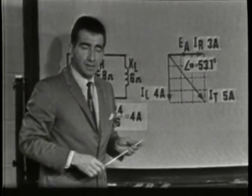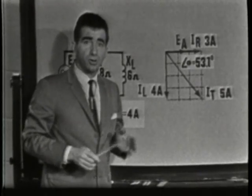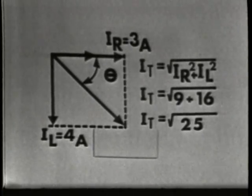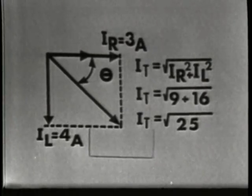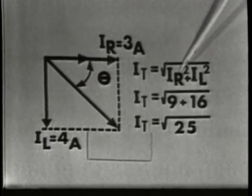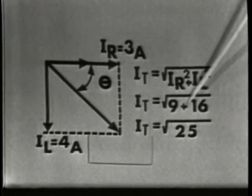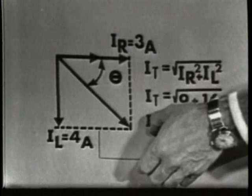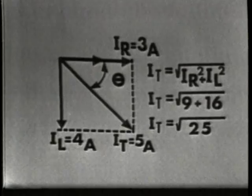Measuring the graph is approximate at best. The most accurate way to solve the problem is trigonometrically. Since the vector representation can be closely related to a right triangle, the Pythagorean theorem may be used to solve for IT. IT is equal to the square root of IR squared plus IL squared. IT equals the square root of 9 plus 16, or the square root of 25, which is 5. So IT equals 5 amperes — the same value we found on the chart.